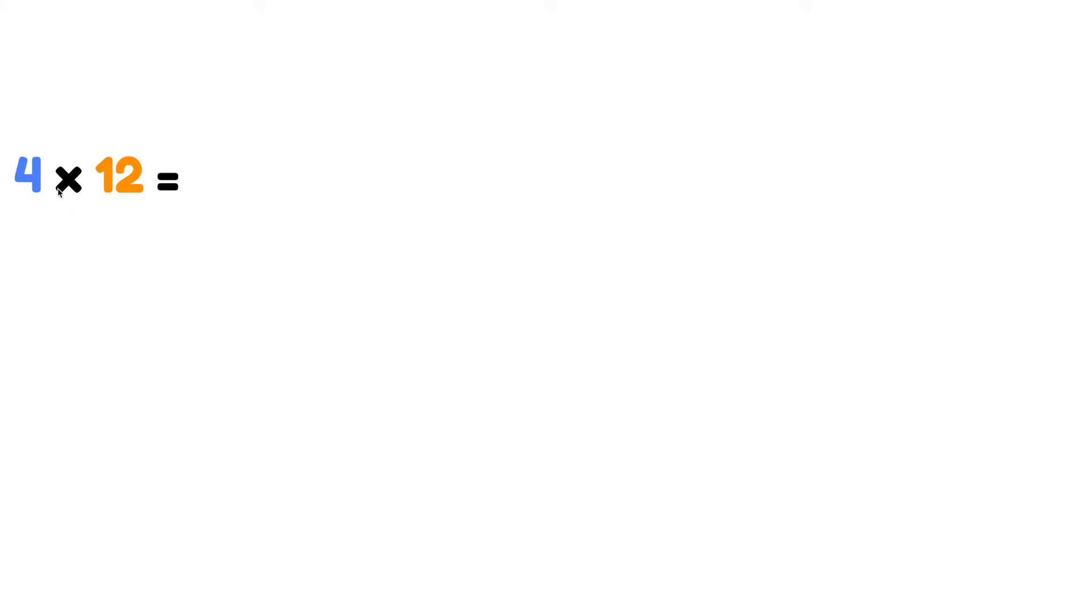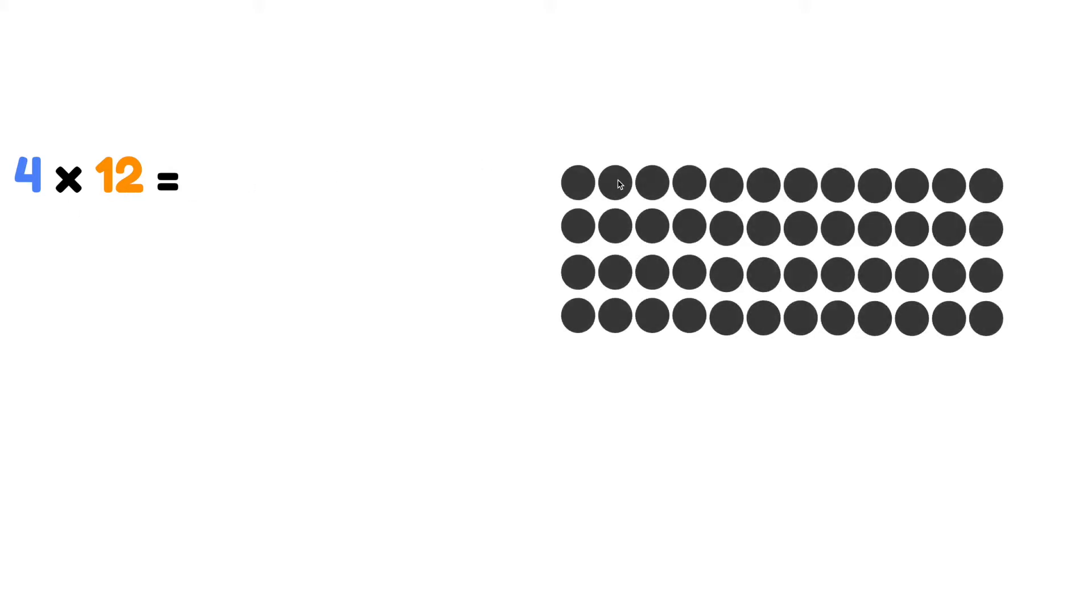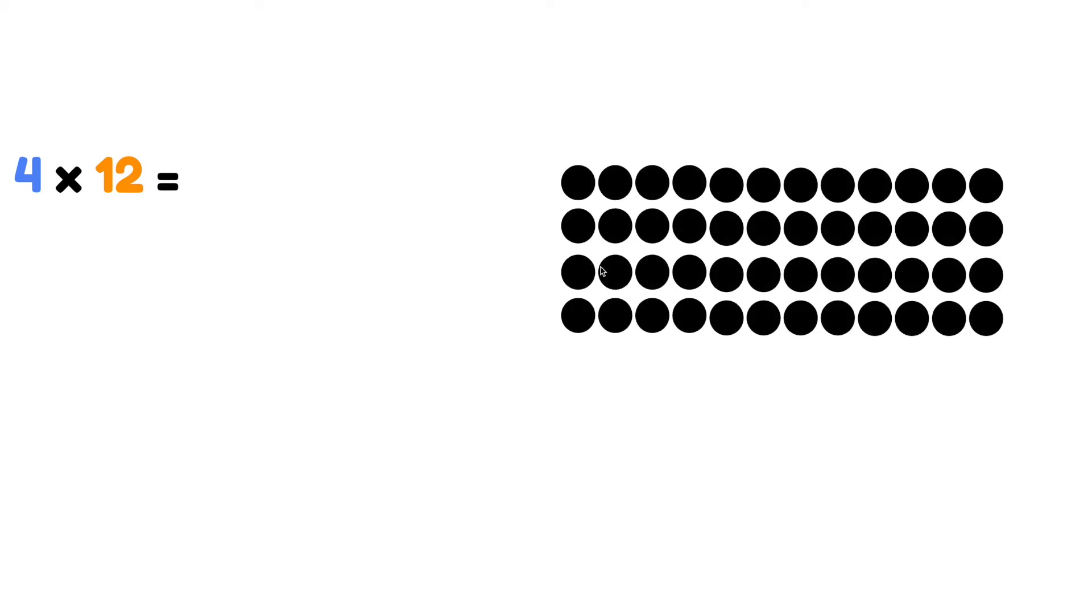4 times 12 means 4 rows of 12. Let's look at an array. We have 4 rows: 1, 2, 3, 4. 4 rows with 12 in each row.